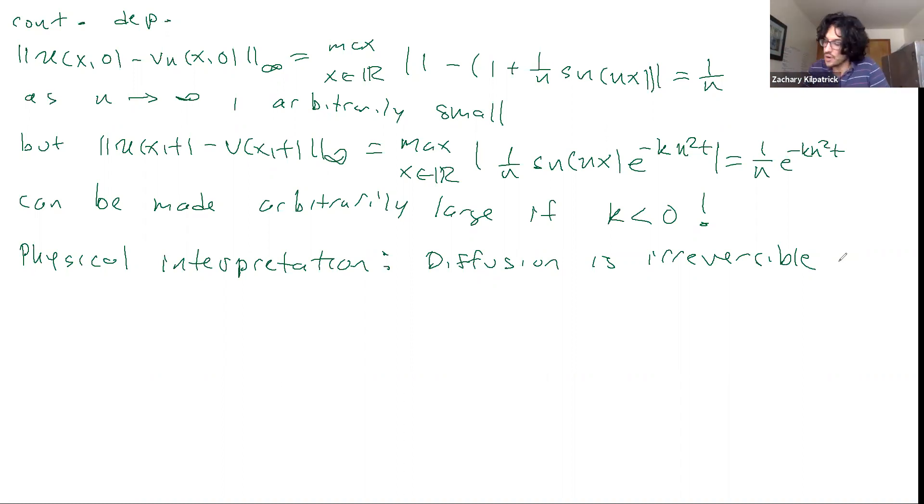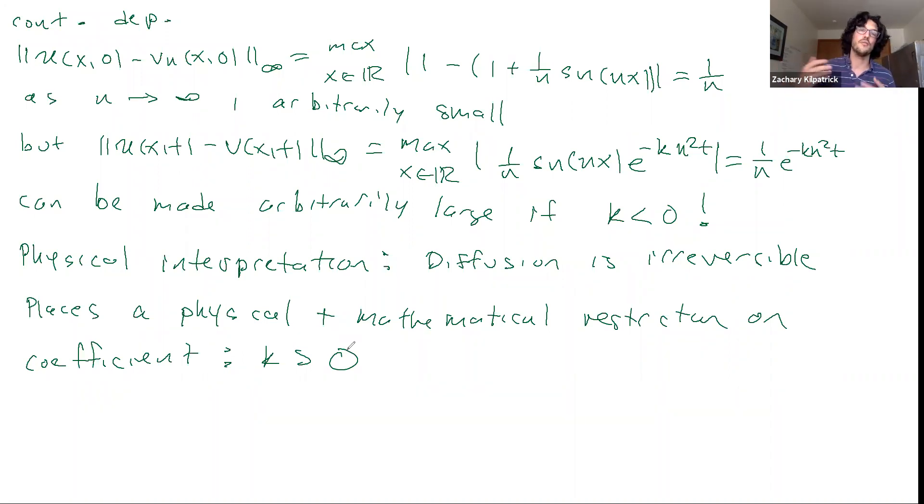So this basically places a physical and mathematical restriction on the coefficient. So k has to be greater than 0. You can also check this numerically. If you try and solve a diffusion equation using finite difference or something like that, and you have a negative diffusion coefficient, you get all sorts of instabilities and things like that. So that's the last example I want to go through today. Are there questions or comments?